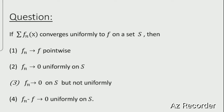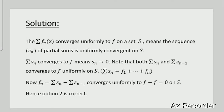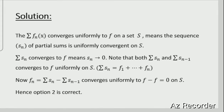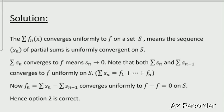Now let us see the solution. If Σf_n(x) converges uniformly to f on a set S, this means the sequence S_n of partial sums is uniformly convergent on S. The fact that S_n converges to f means S_n tends to 0 — this is the criterion for the convergence of a series.